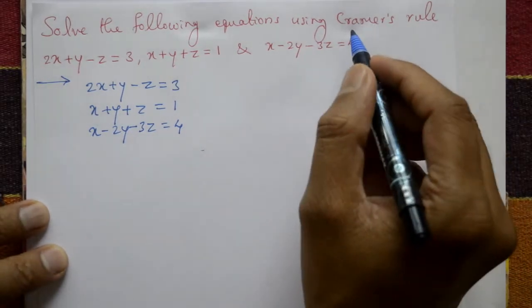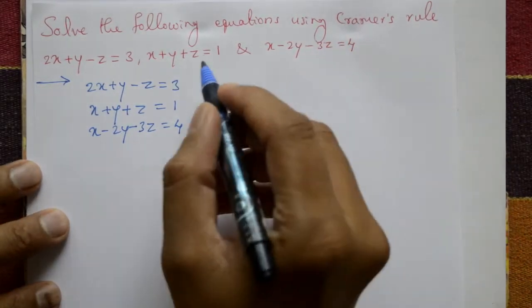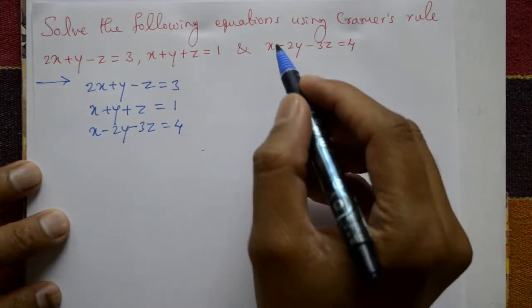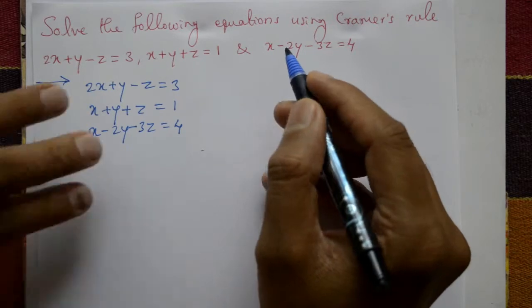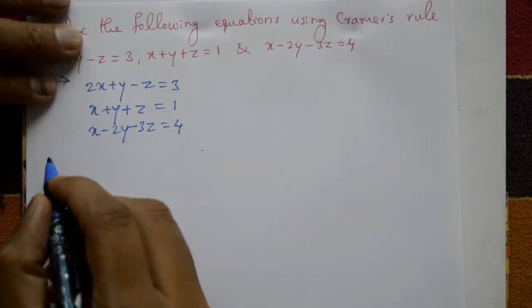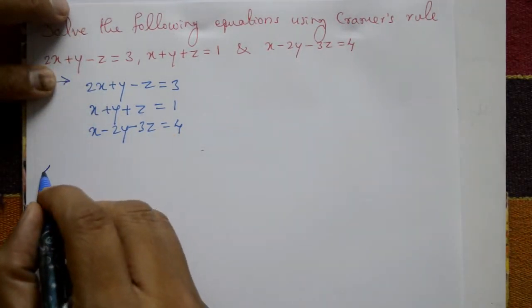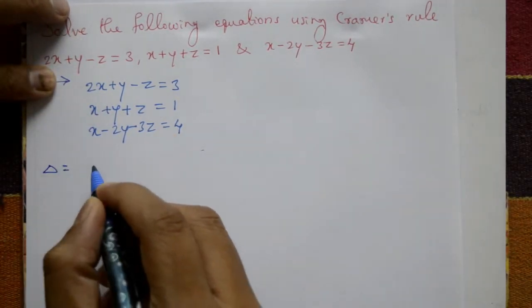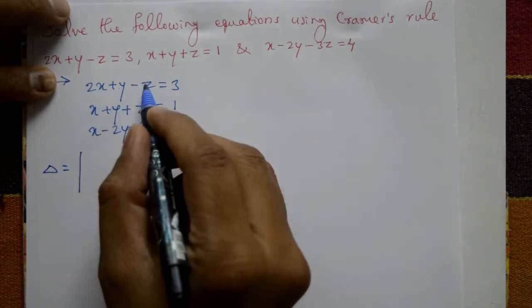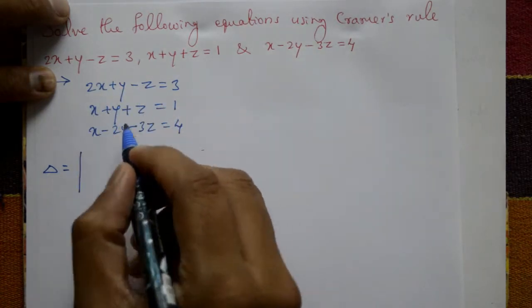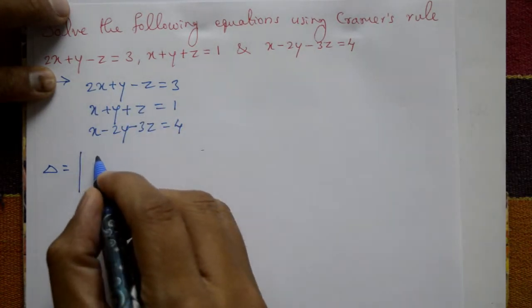By using Cramer's rule, find x, y, z values. First, find Delta. Delta is equal to the determinant formed by taking the coefficients of x, y, z from all three equations.